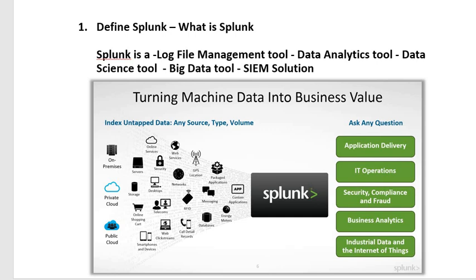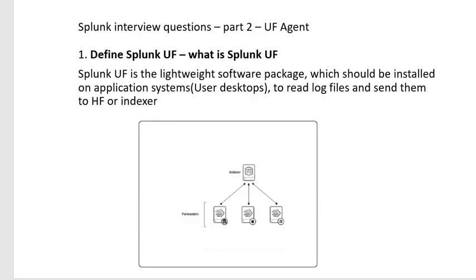On a typical Splunk installation we will have one or a few — let's say 10 — indexers approximately. For these 10 indexers we may have thousands of forwarders, and all the forwarders would be sending logs to the indexers. Sometimes there can be an intermediate layer called a heavy forwarder — we will see that in upcoming videos.